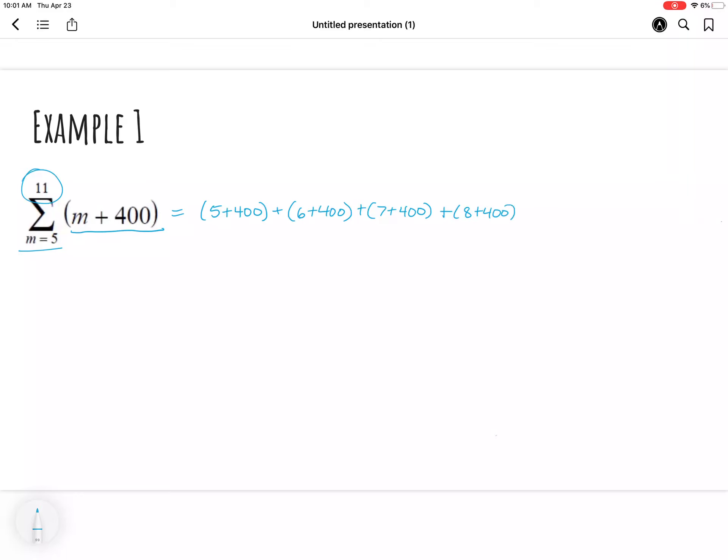And sum all of these values that I put in the series together, giving me 405 plus 406 plus 407 plus 408 plus 409 plus 410 plus 411.